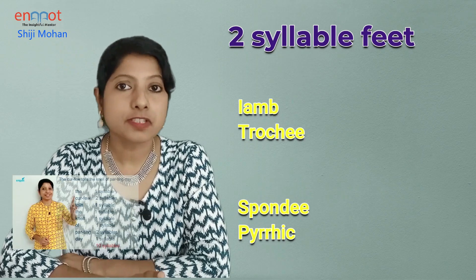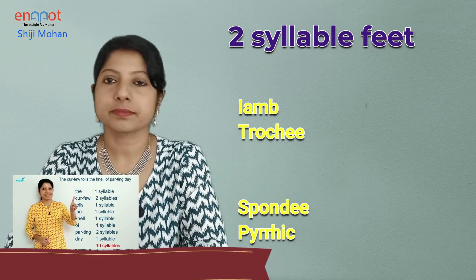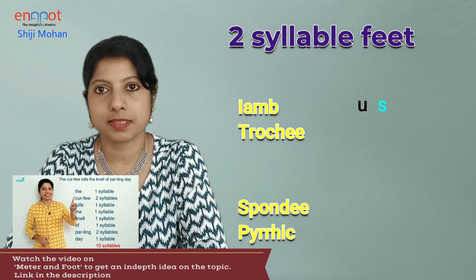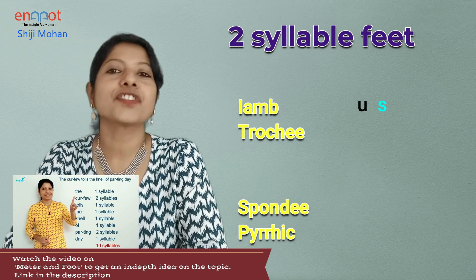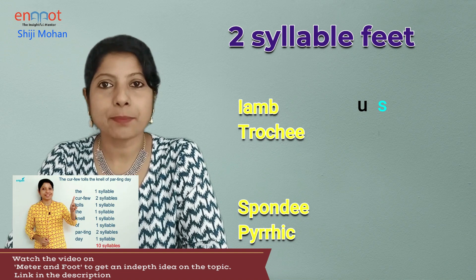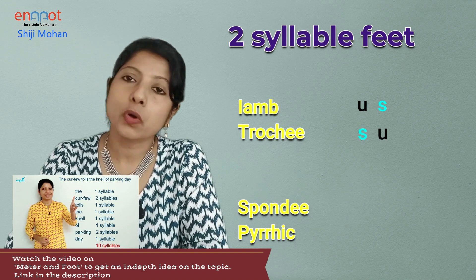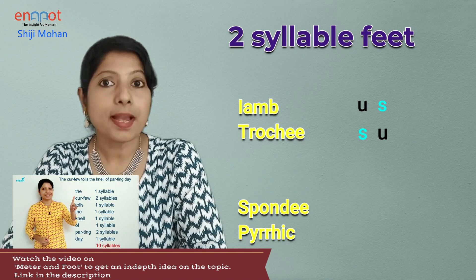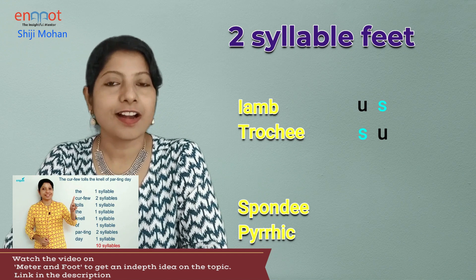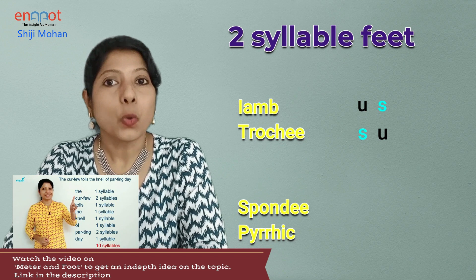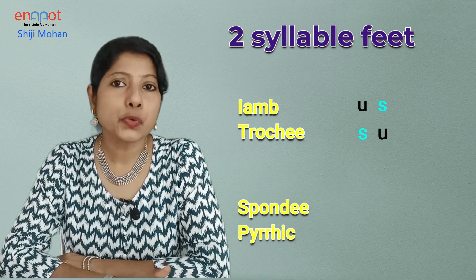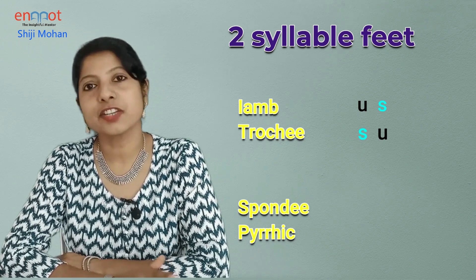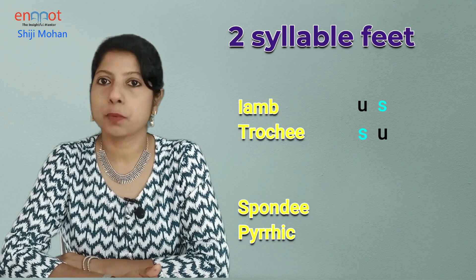Iamb is a metrical foot in which an unstressed syllable is followed by a stressed syllable, and trochee is just the reverse of iamb, with a stressed syllable followed by an unstressed syllable. Iamb and trochee are the only metrical feet that are usually used consistently throughout a poem.